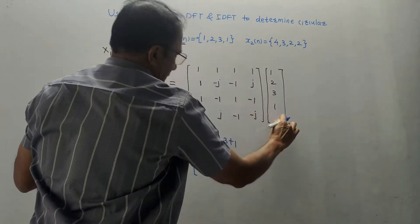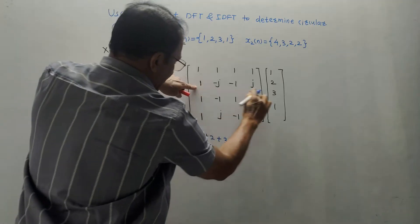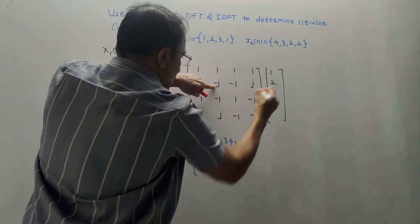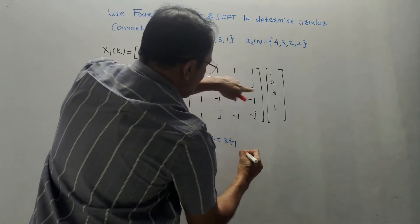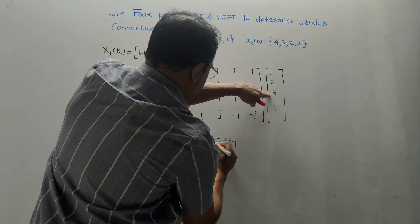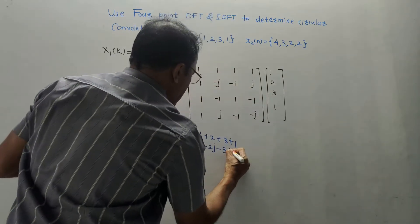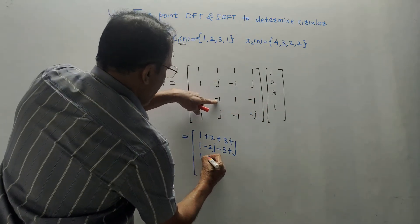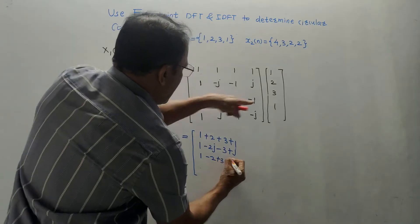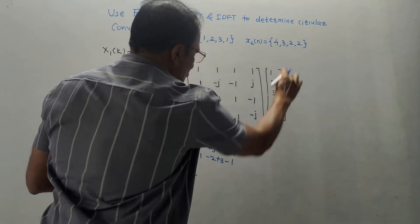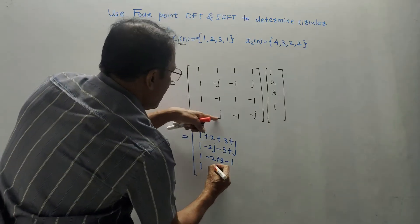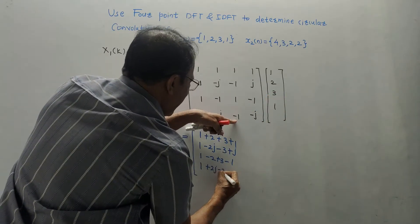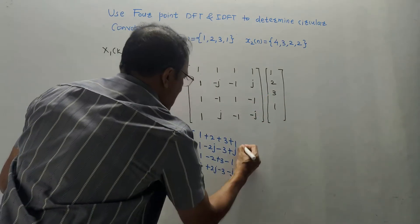For the second row, same column: 1×1 = 1, then −j×2 = −2j, then −1×3 = −3, and j×1 = +j. Third row, same column: 1, −2, 3, −1. Last row, same column: 1 + j×2 = 2j, then −1×3 = −3, and −j×1 = −j.